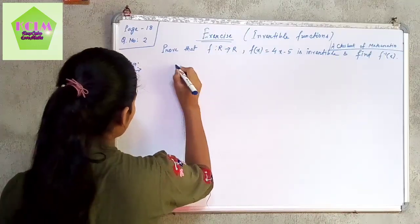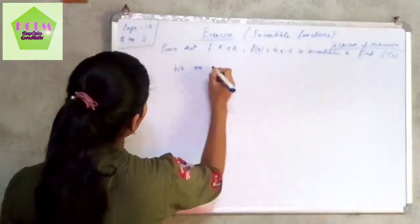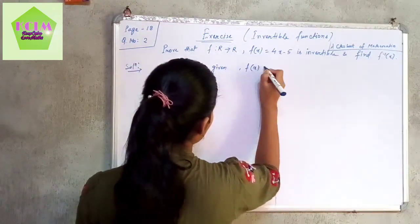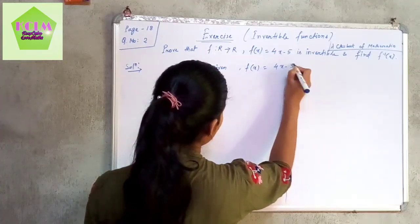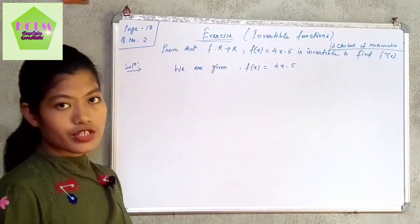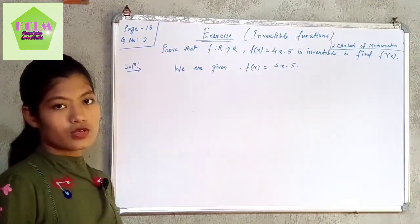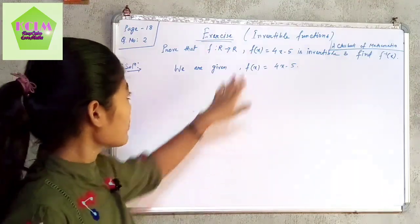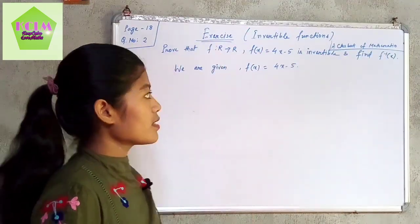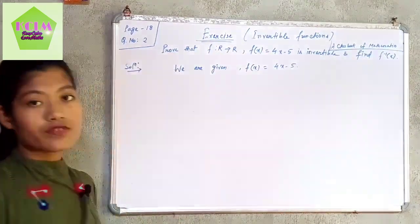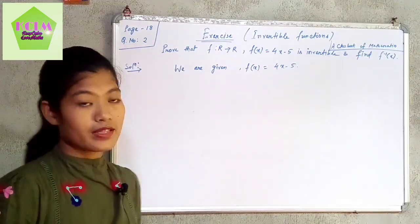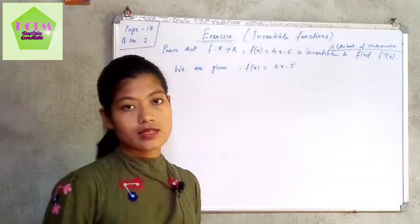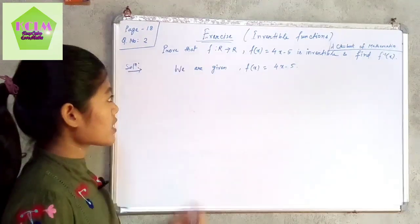We are given f(x) = 4x − 5. In the definition of invertible functions, we have already discussed that to show invertibility of a function, first we need to find another function g from R to R, then we need to show that their composite functions are identity maps. Then only we can say that this function has an inverse and is invertible.